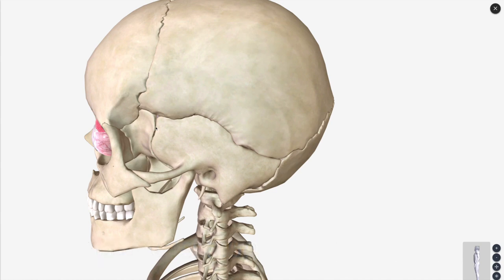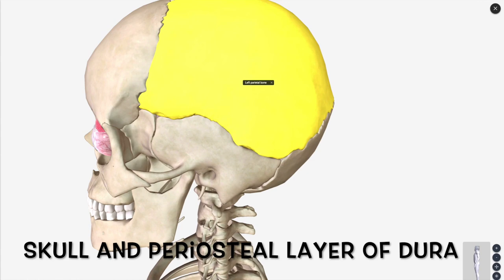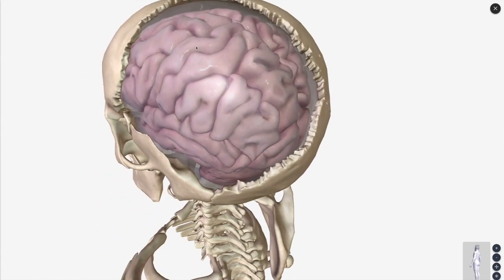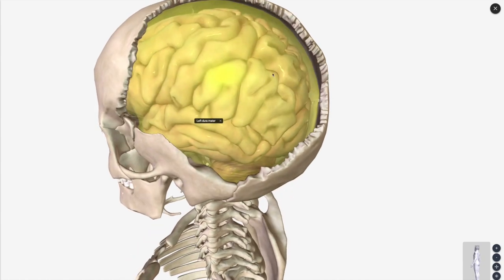Your extradural hematoma is going to occur between the skull and the dura. So if we remove this parietal bone, you can see very faintly — if I click here — you can see the dura mater.